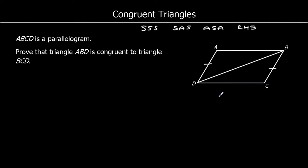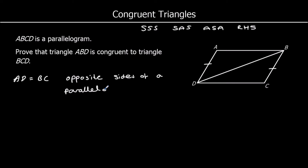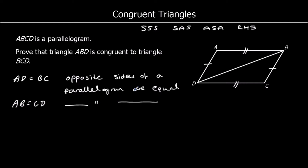So let's look at what we know about a parallelogram. We can say opposite sides in a parallelogram are equal, so AD equals BC — and I need to give a reason for each stage of my working, so AD and BC are the same length because opposite sides of a parallelogram are equal. We can do the same with AB and CD — again opposite sides of a parallelogram are equal. And BD is common to both triangles.